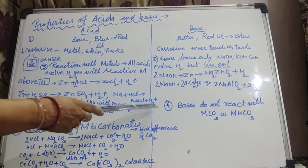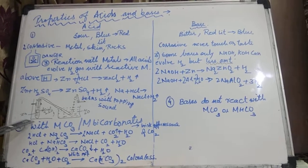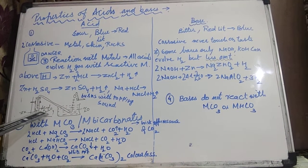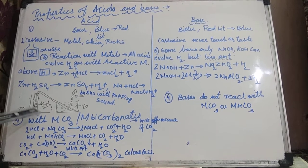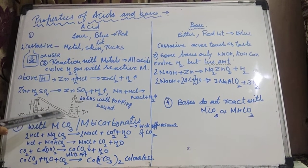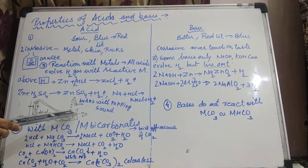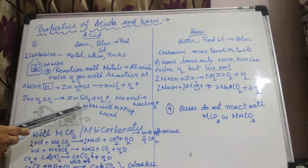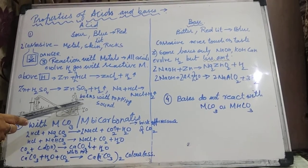How to prove that hydrogen gas is evolving out? For proving that, we are taking one activity. Suppose in a test tube, I am taking granules of zinc metal, small pieces. When dilute H₂SO₄ mixed with water is added into this test tube, hydrogen gas starts evolving out. That hydrogen gas passes through a delivery tube opening into a trough containing water. Bubbles of hydrogen can be seen. If we bring a burning matchstick near the bubbles, they burn with a popping sound.